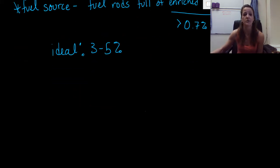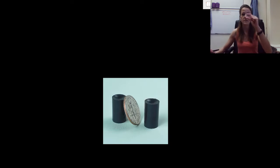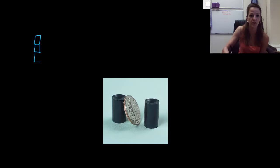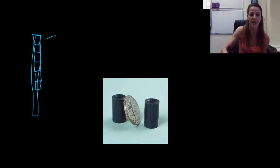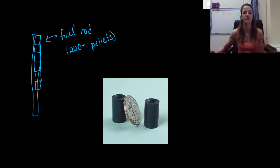What is a uranium pellet? It's exactly what it sounds like — a teeny tiny little thing about the size of a U.S. dime. What we do is take these little pellets and stack them on top of each other. We have about 200 different pellets placed in a vertical column, and we put them all together to get something called a fuel rod. A fuel rod can have anywhere between 200 or more of these enriched uranium-235 pellets.